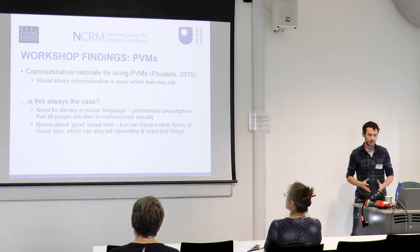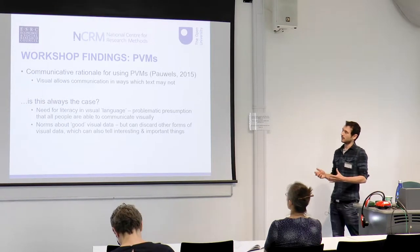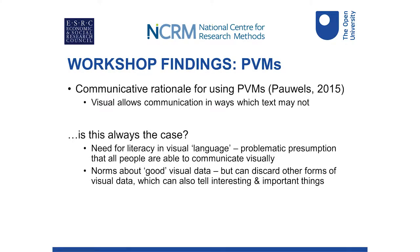We also discussed reasons why we might use participatory visual methods in research. Luke Powers talks about a communicative rationale — that the visual allows communication in ways that text may not, opening up different communicative avenues. But people questioned this, saying it's problematic to assume that the visual is more accessible as a communicative tool. Just as we need language to communicate verbally, we also rely on a visual language to communicate visually, so it's problematic to presume that everyone can just communicate visually. There are also cultural norms about what might be considered good visual data.